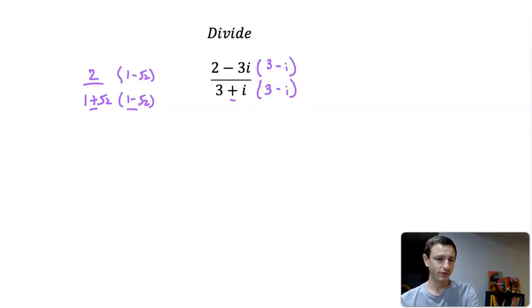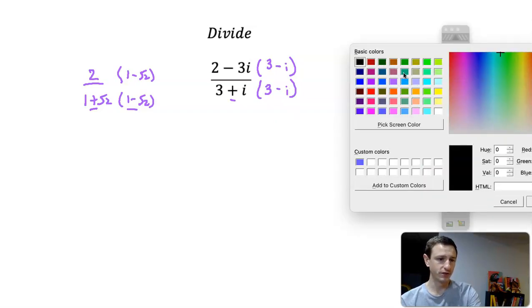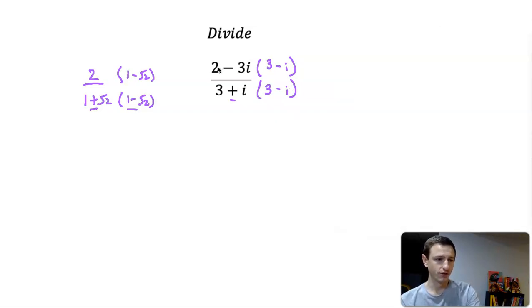On the top we have some work to do with this expression. We're going to do 2 times 3 which is 6, 2 times negative i which is negative 2i, negative 3i times 3 is negative 9i, and then negative 3i times negative i.